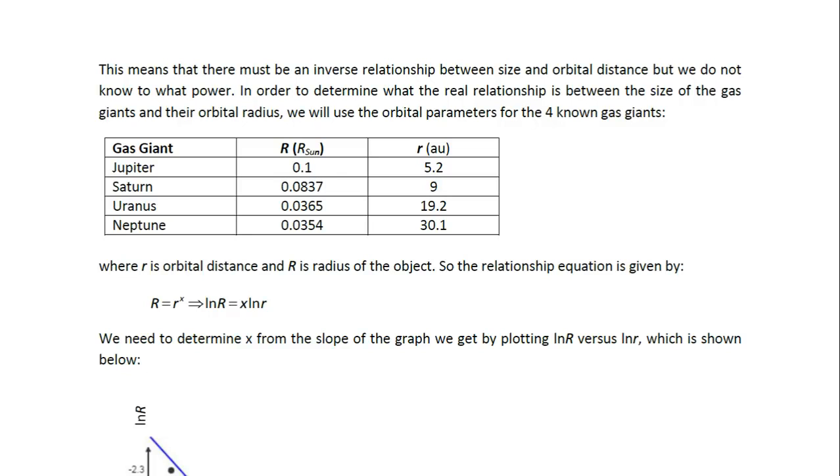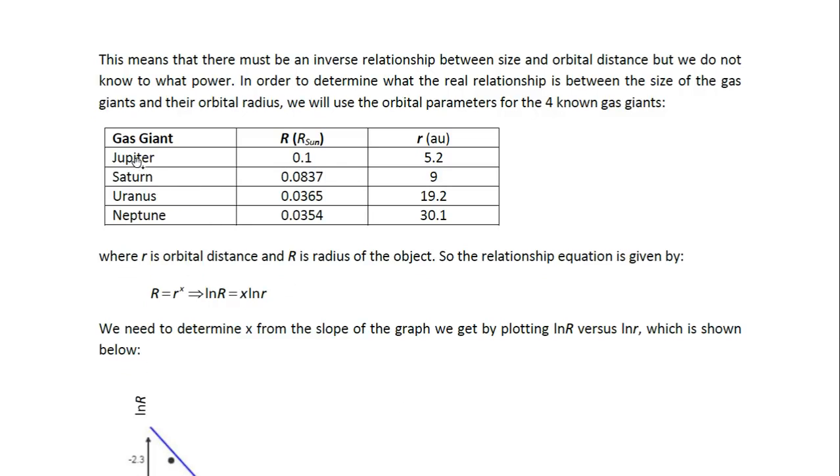And in order to determine that, we are going to use the orbital parameters for the known gas giants. So here we have capital R stands for their radii, and that's in terms of the Sun's radius. Jupiter is 0.1, and Saturn, Uranus and Neptune is 0.0837, and it decreases as we move down this column. And then their orbital distance is given by the little r in this column. So it's 5.2 for Jupiter, 9 for Saturn, 19.2 for Uranus and 30.1 for Neptune.